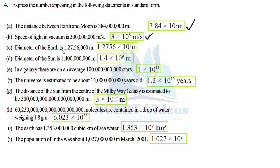Part (c): diameter of Earth. Significant digits are 1, 2, 7, 5, 6 — write 1.2756. Put the decimal after the first digit. Count all the digits: 3, 4, 5, 6, 7, 8 — that is 8 digits, and 8 minus 1 gives 10 raised to power 7. So the diameter of Earth is 1.2756 × 10⁷ meters.